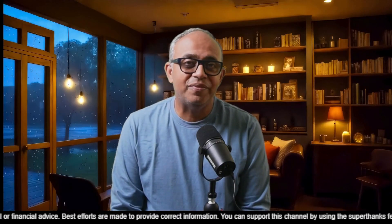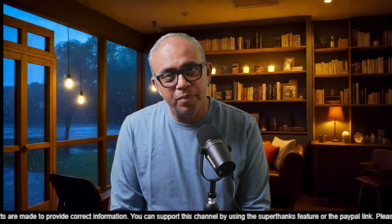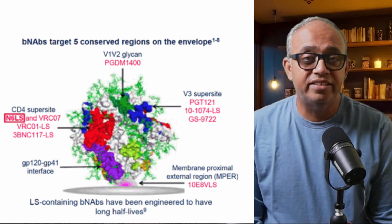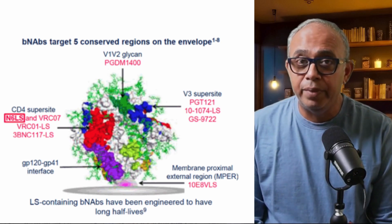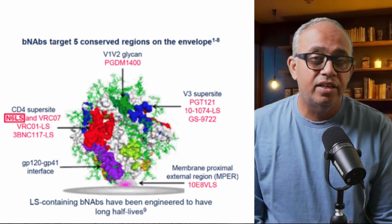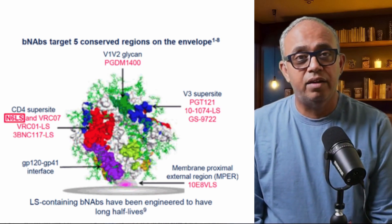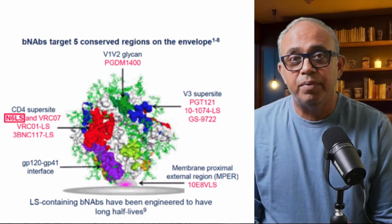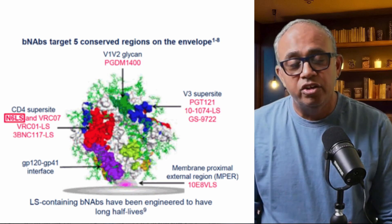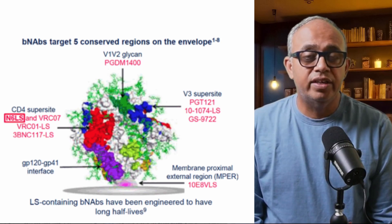Welcome back friends. Let me start by describing the MPER and its role in propagating HIV. The membrane proximal external region, or MPER, is a highly conserved segment of HIV-1 GP41 envelope glycoprotein located near the viral membrane. This region plays a crucial role in the virus's ability to fuse with host cells, a necessary step for HIV to infect those cells.